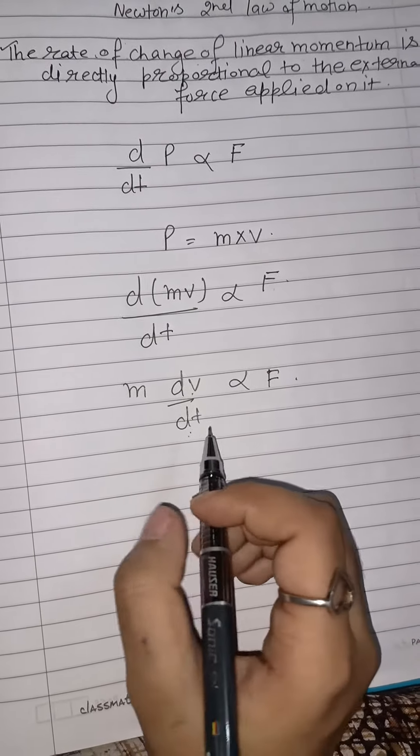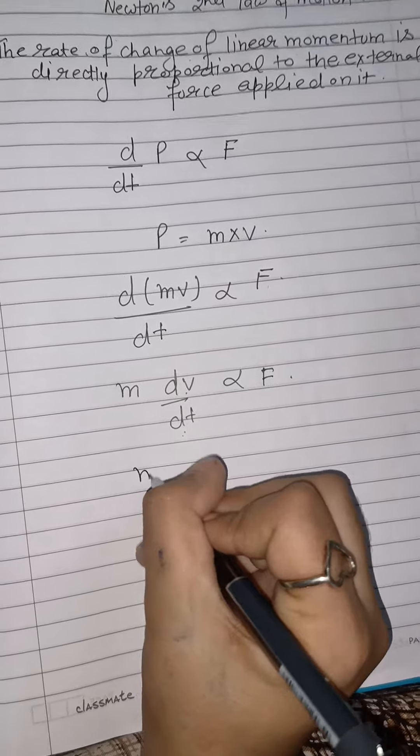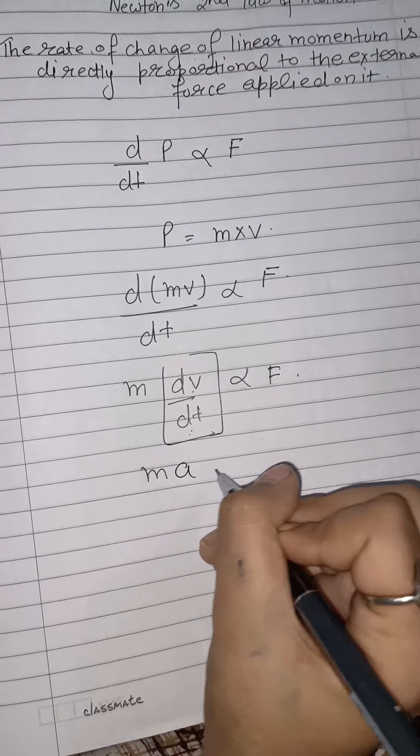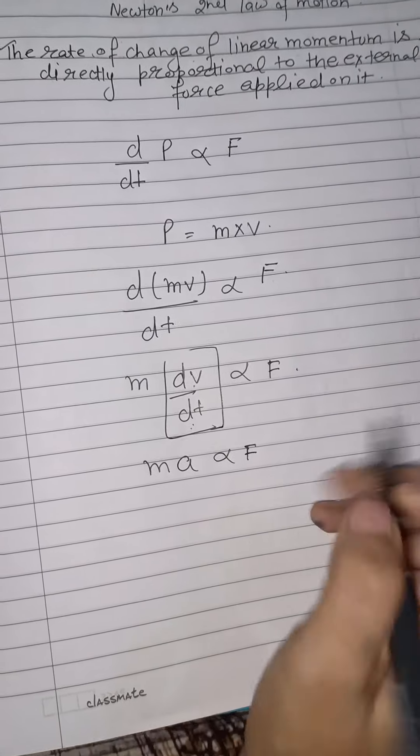Velocity by time, we have acceleration. So we have m times a proportional to force.